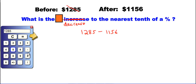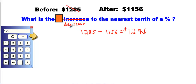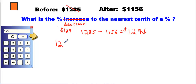$12.85 minus $11.56 gives us $1.29. That's how much the price fell — it decreased by $1.29. Now we have to turn that into a percent. Just like on an exam, we take our decrease and divide it by the total.